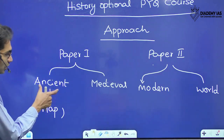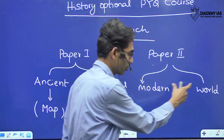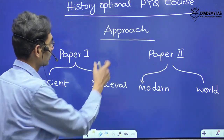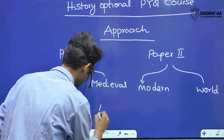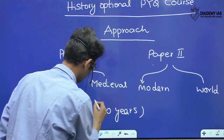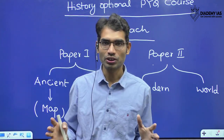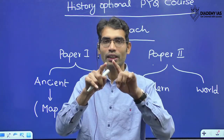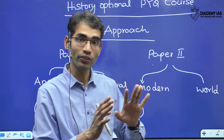Paper 1 contains Ancient India and Medieval India. Paper 2 contains Modern India and Modern World history. When it comes to previous year questions, we are going to cover 40 years of previous year questions, and we are going to categorize all these 40 years' questions into different themes.